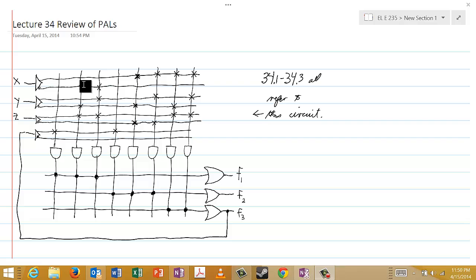And the X's denote the programmable connections that have been made. And the dots down here denote the permanent connections.